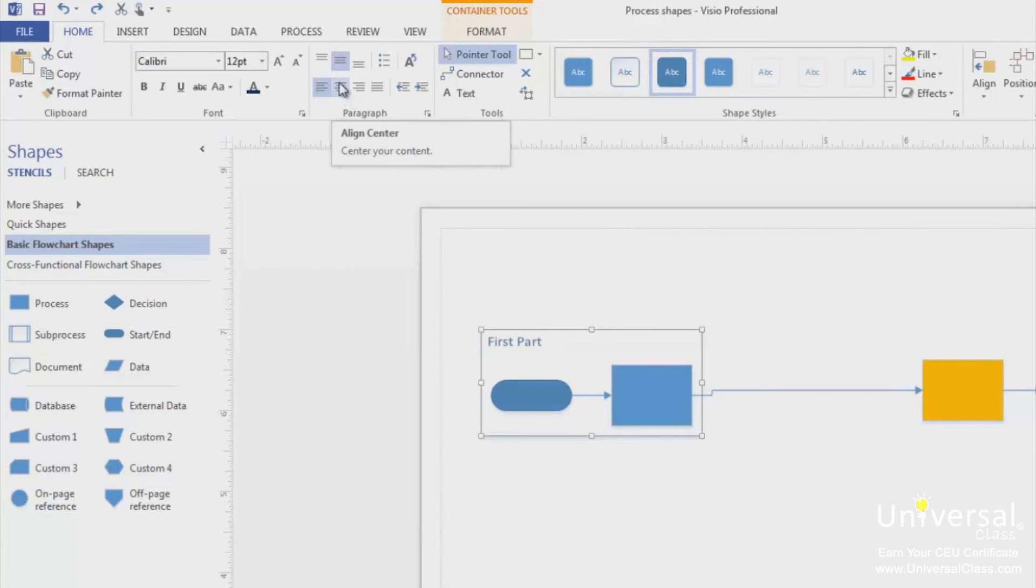A callout is an annotation shape. It describes other shapes in a drawing. A callout can be associated with a shape and will move with the shape if the shape is moved. Let's learn how to use a callout.